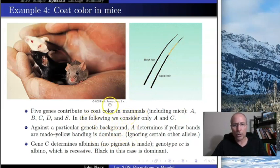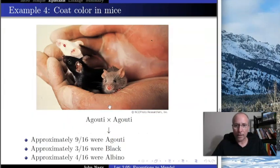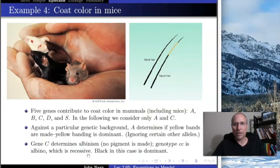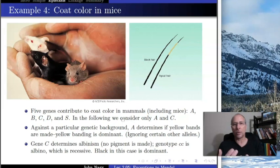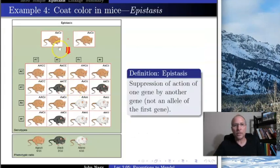Looking back at this dataset, notice we're getting ratios out of 16. That makes sense — we are seeing two different genes at play. Remember when Mendel had two genes, we got 4x4 Punnett squares with 16 cells. The two agouti mice were heterozygous for both A and C — big A, little a, big C, little c — so they make melanin and are agouti.